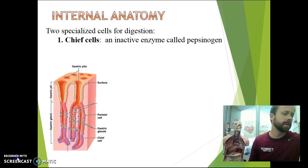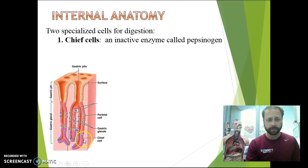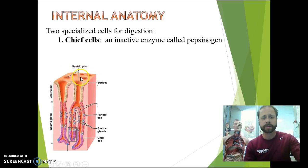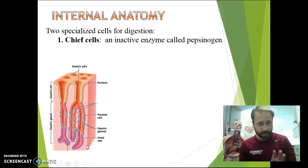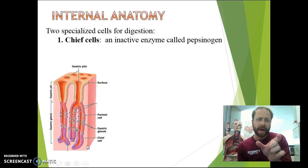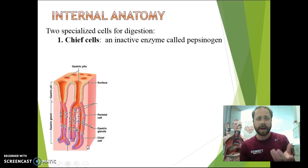Now going deeper, looking at the internal anatomy, we have these chief cells. The chief cells are located up top where the rugae are — this is like the inside surface lining of the stomach. The chief cells are going to produce an enzyme called pepsinogen. Now it's an inactive enzyme, so it's not doing anything when it's first being produced and released. If we look at the prefix and root words, 'pep' means protein, so we know that this enzyme is going to be dealing with protein — in fact, it's going to help break down protein. But it has to become active in order to do that.